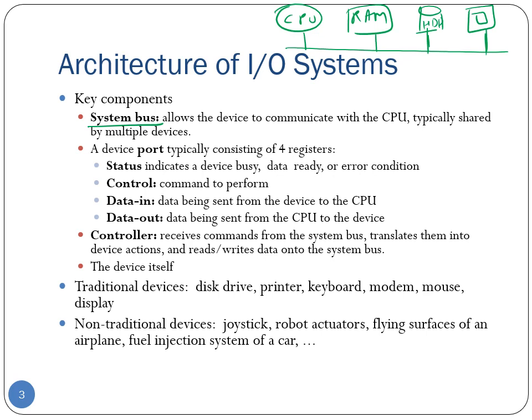Even the simplest I/O devices have an abstraction called the device port. The port is essentially a set of registers that the machine uses to send data to and from the device. There are four such basic registers: the status register, the control register, the data-in register, and the data-out register.